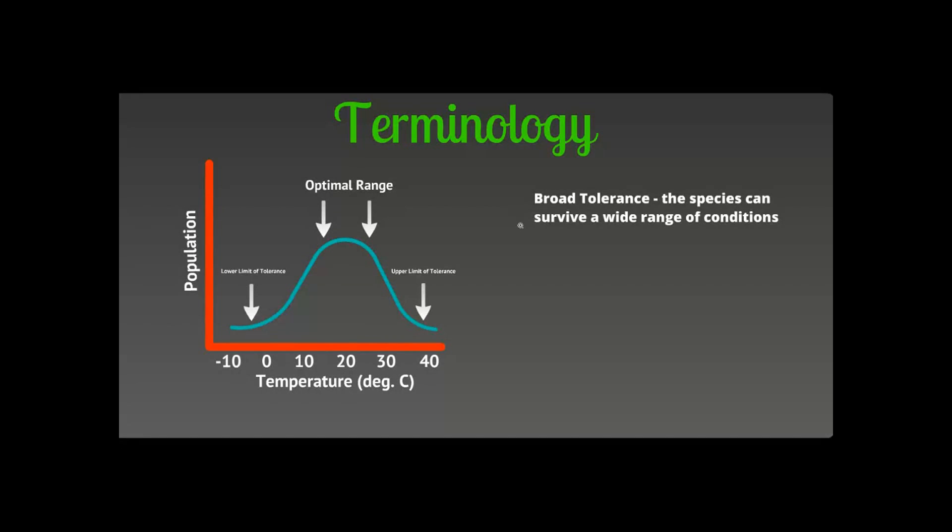Then we have a couple more terms that you might see. Broad tolerance - this means that a species can survive a wide range of conditions. I'll show you in a second. But this is when the bell curve is stretched out. So species can survive all sorts of temperatures or all sorts of amounts of precipitation or whatever you're tracking.